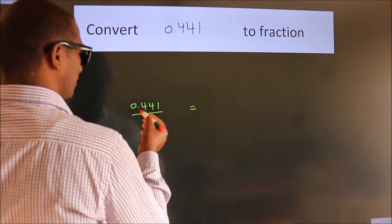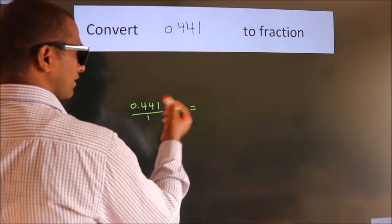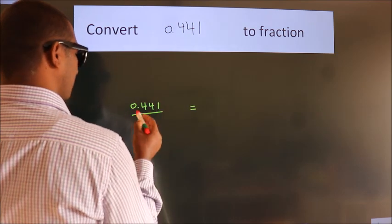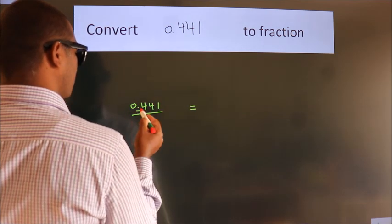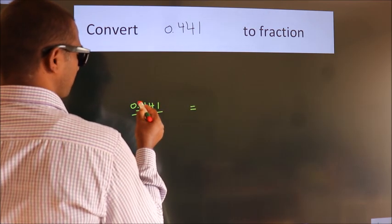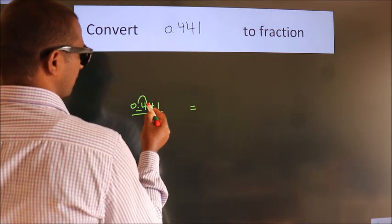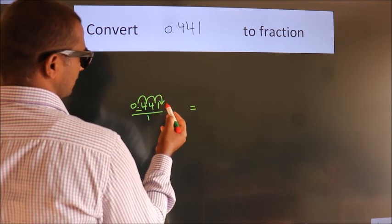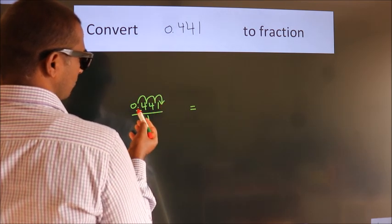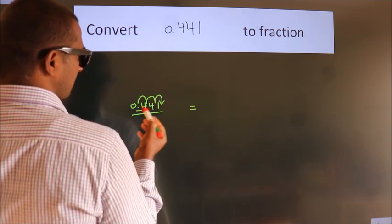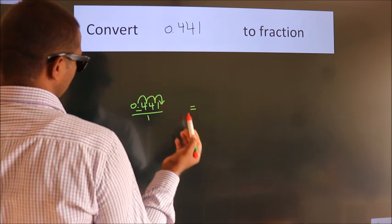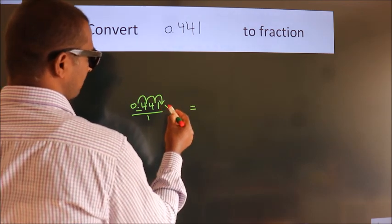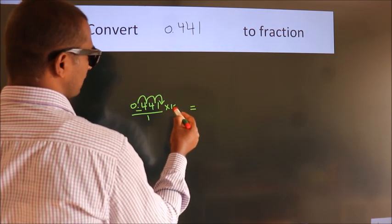To convert this to a fraction, we have to move this decimal after 1, 2, 3 numbers. To move this decimal after 3 numbers, we have to multiply it with 1000.